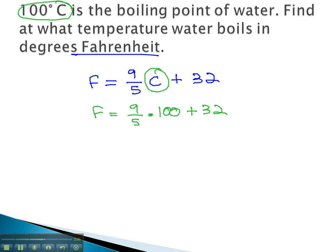Order of operations then, working left to right. We're going to do the division 9 fifths first. 9 fifths is 1.8 times 100 plus 32. Finishing the multiplication. 1.8 times 100 is 180 plus 32.